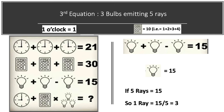Now we have every item's value present in this puzzle. First, the clock's value equals the time shown by the clock. Second, the calculator's value is the sum of numbers displayed on it. Third, the value of each ray is equal to 3.